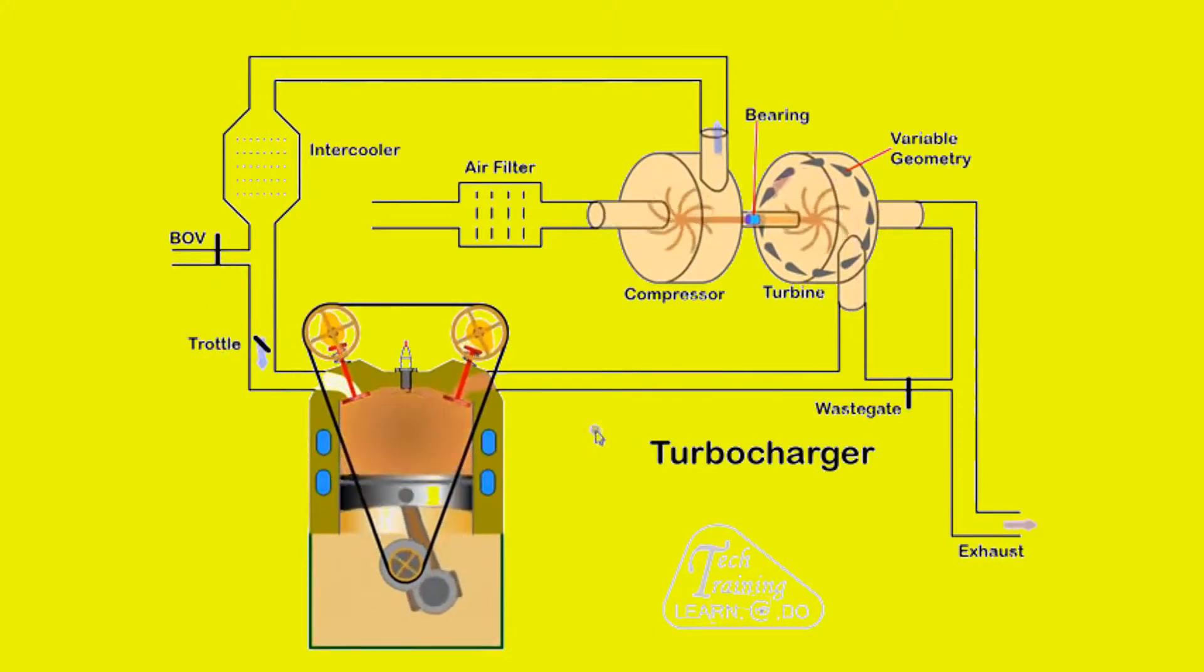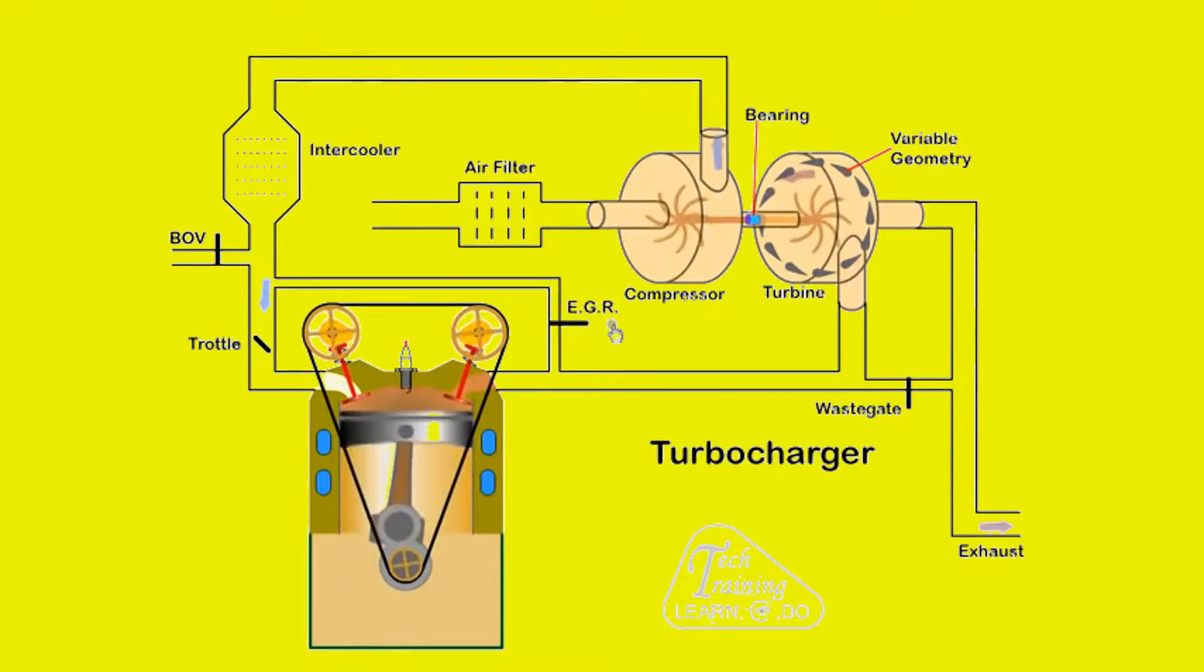Exhaust gas recirculation recirculates a small amount of exhaust gas back to the inlet under certain operating conditions. This reduces the amount of oxygen in the charge and helps to reduce combustion temperature and emissions.